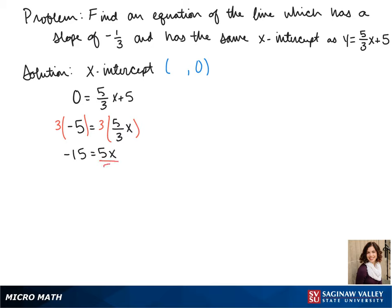We divide both sides by five and we see that our x-value is negative three. So our x-intercept is negative three, zero.